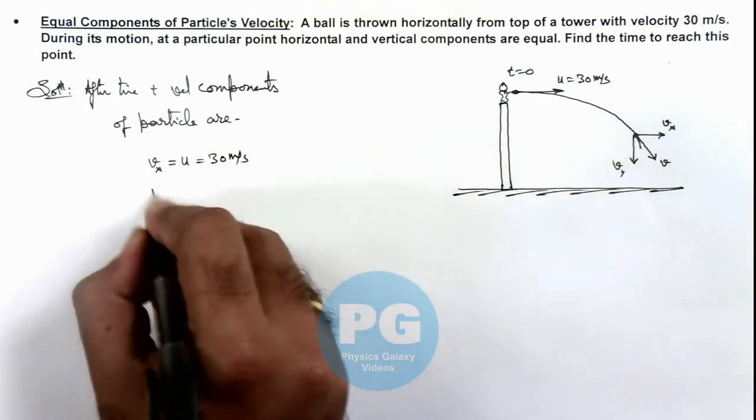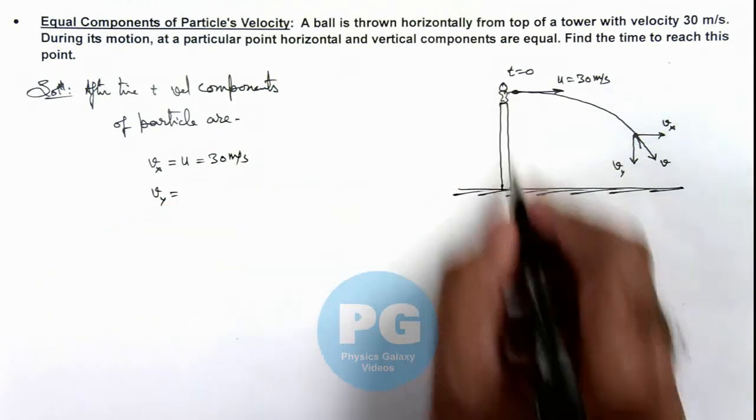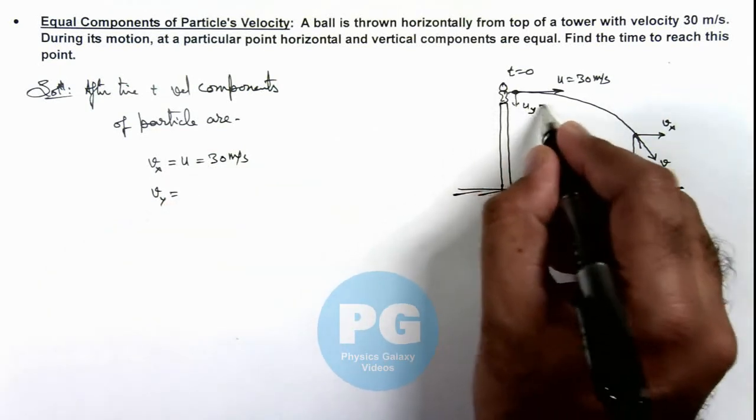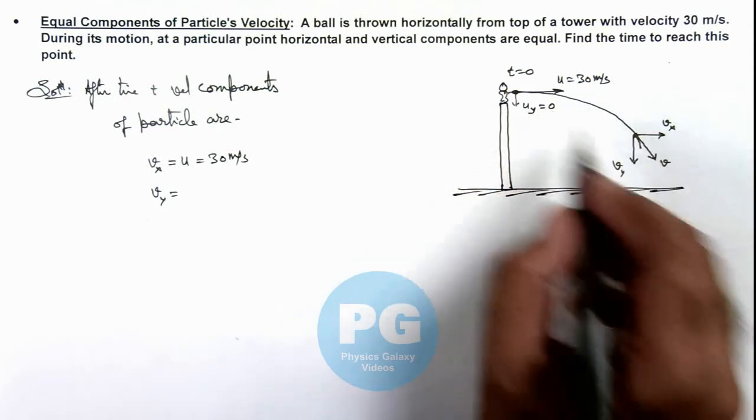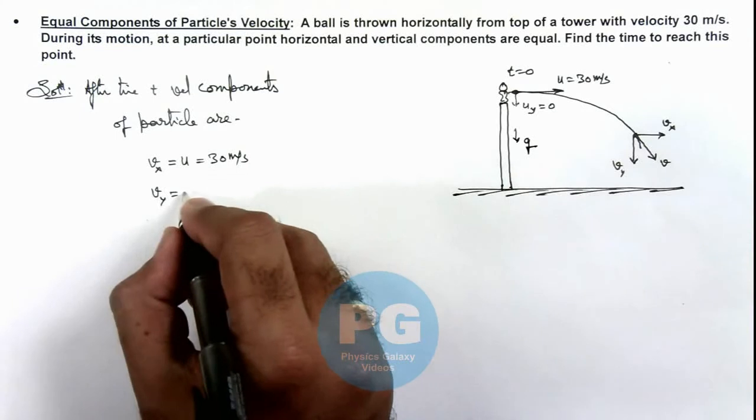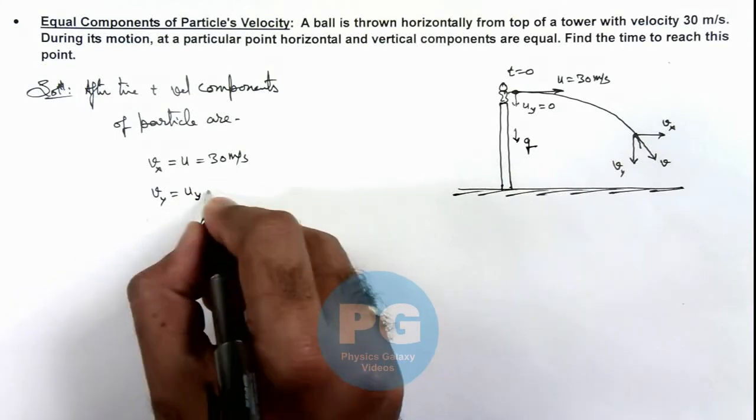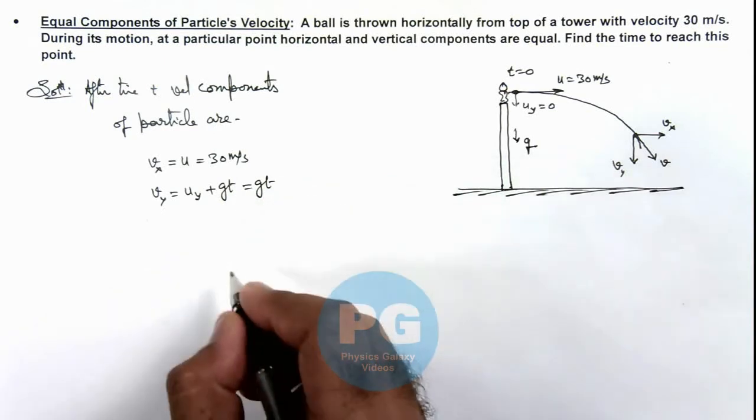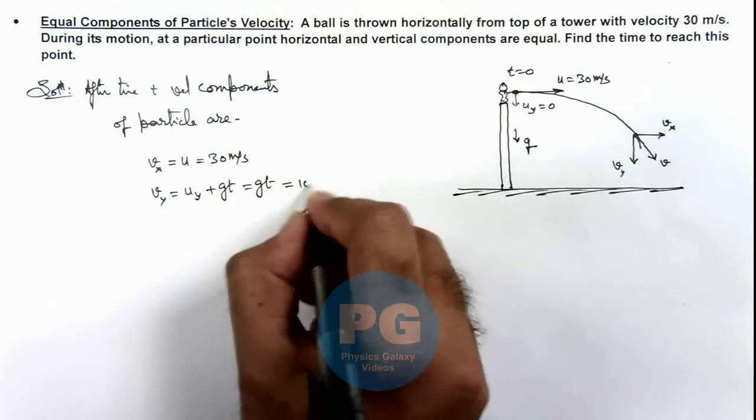And if we talk about velocity component in vertical direction, here we can see initial velocity in y direction was zero, so it is falling with acceleration g. So here we can write v_y is equal to u_y plus g t, so here it is only g t, and g we can take as 10, so this is 10 t.